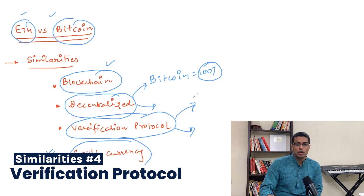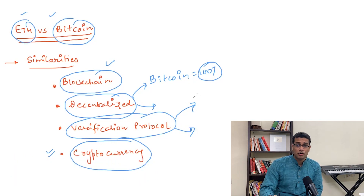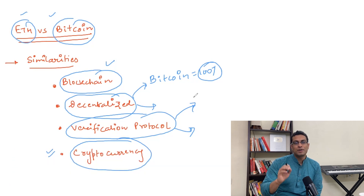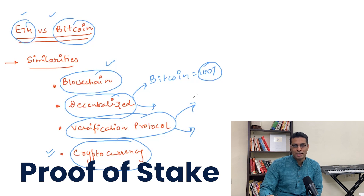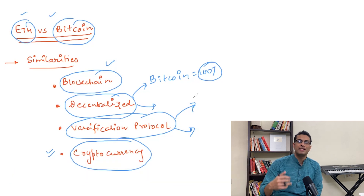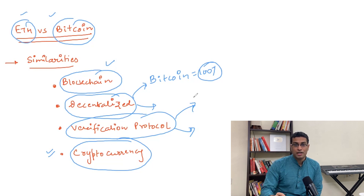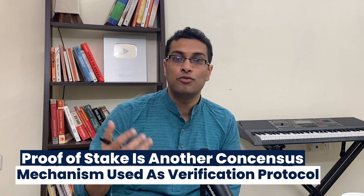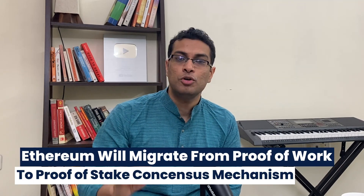The concept of verification protocol means that whatever data is being put on these networks, there needs to be a mechanism to verify it. You must have heard of things like proof of work or proof of stake. Right now, both Ethereum and Bitcoin are based on a proof of work consensus mechanism — a mechanism that determines how data on the blockchain network is put and verified. An interesting fact is that Ethereum is going to migrate from proof of work to proof of stake consensus mechanism.